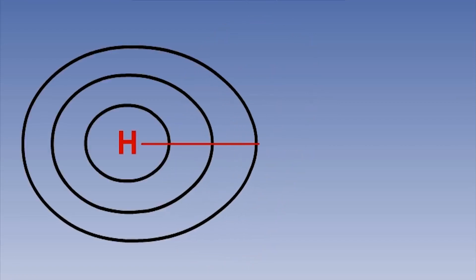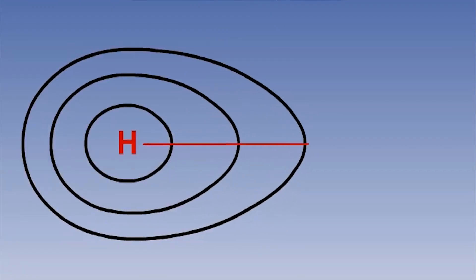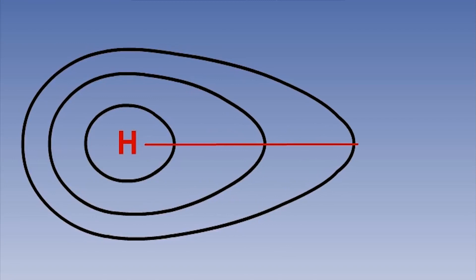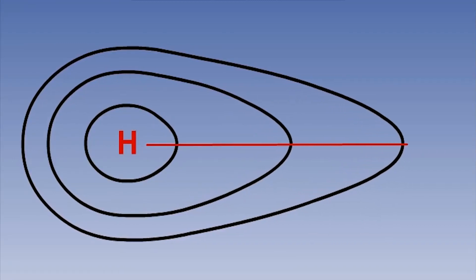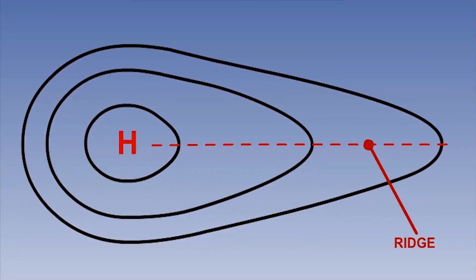If we see the isobars protruding outwards from the high pressure into an area between two lows, we call this a ridge. It signifies an extension of the high pressure into another area, spreading its influence.